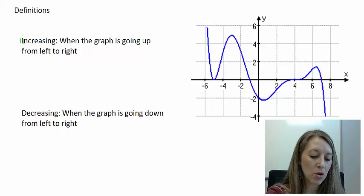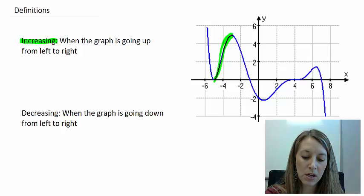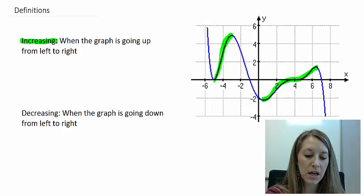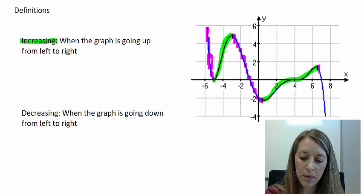Let me do increasing in green — that's where my graph is going up from left to right. So it's increasing here, here, and through here. And then every place else it's decreasing, which I'll denote by pink. So it's decreasing down through here, all the way through there, and then all the way through there.